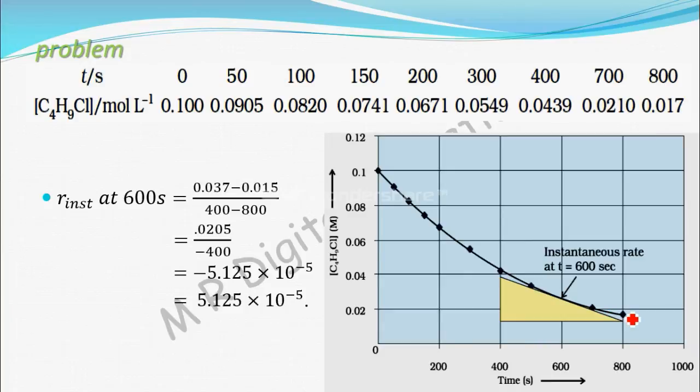To calculate the instantaneous rate at time t = 600 seconds: this is 600 seconds on the graph. At this point, you want to find instantaneous rate.